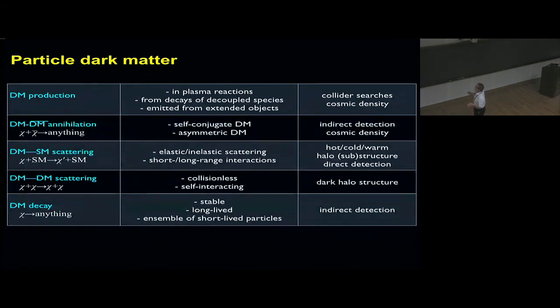For annihilation, we could have self-conjugate dark matter or asymmetric dark matter. We could have a difference between the dark matter and the anti-dark matter particle. With scattering, we can have elastic interactions, inelastic, short range, long range, anything we can think of.